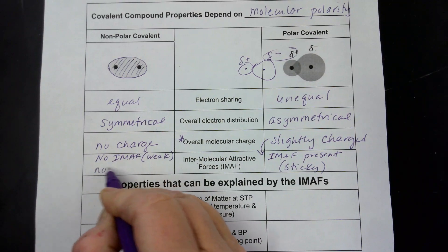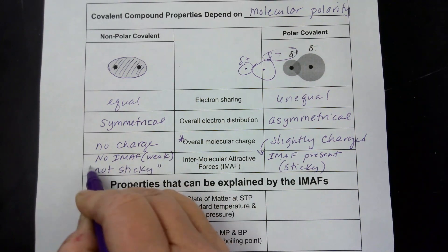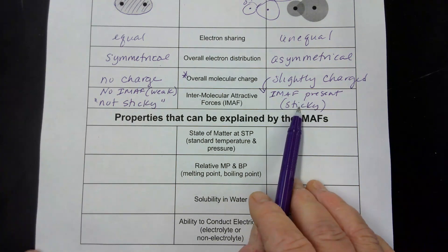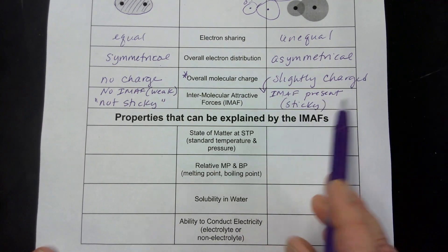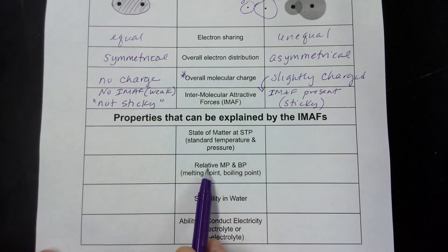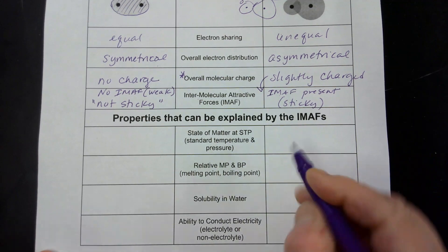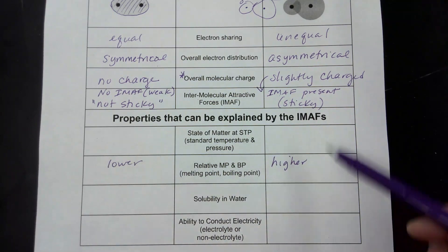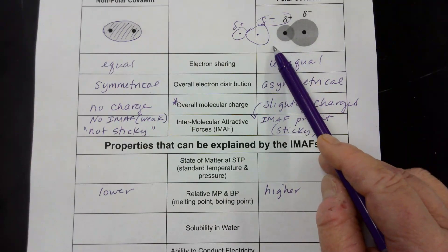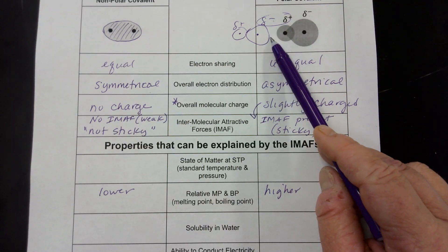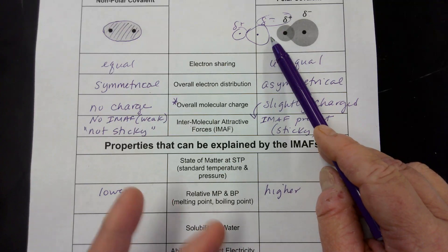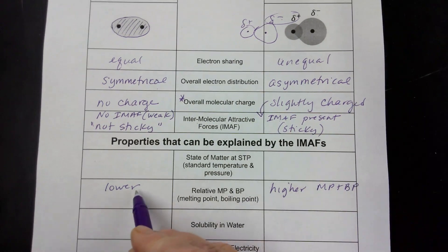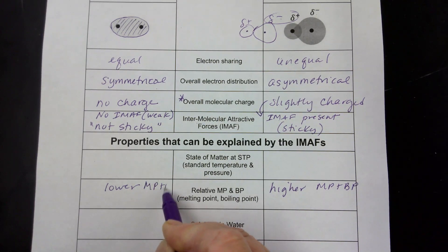A nonpolar covalent will have no intermolecular attractive forces, or if there are, they are very, very weak — which means it is not sticky; these molecules are not going to stick to each other. For polar covalent molecules with these sticky forces between them, the relative melting points and boiling points are going to be higher. For nonpolar covalent, they're going to be lower. If the molecules are sticking together, it's going to take a lot more energy to melt them from their solid state or to boil them away from their liquid state.